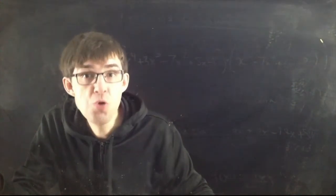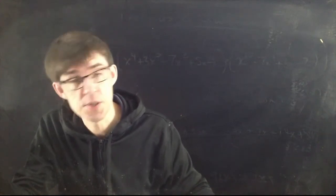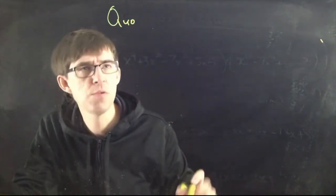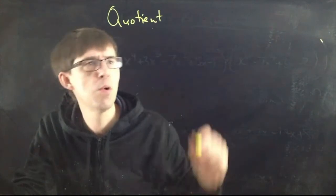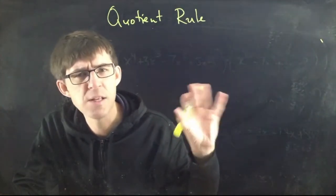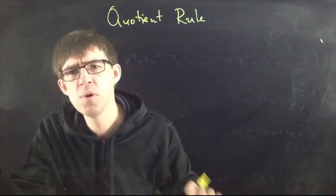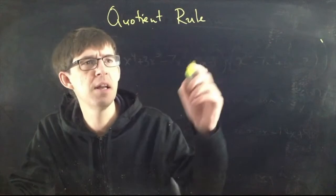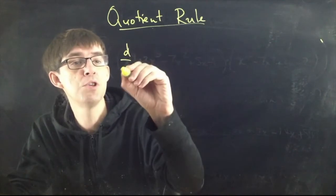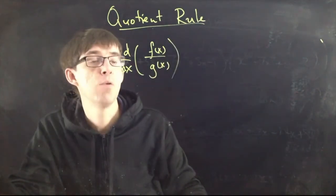That was all about products. What about quotients? There is a quotient rule too. I could give you justification similar to the product rule derivation — you write the definition of the derivative, do some adding and subtracting of the same thing, and it separates out — but it's a little more complicated. Let me just tell you the quotient rule: the derivative of f(x)/g(x).